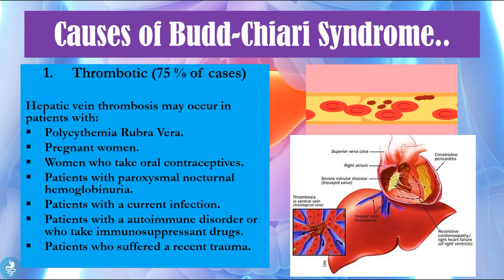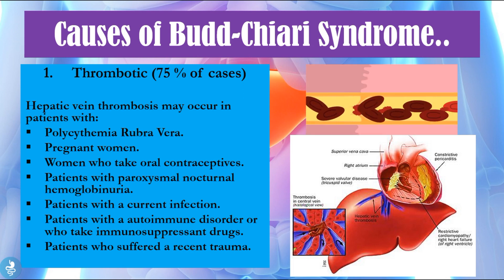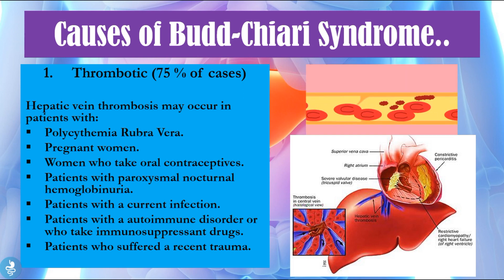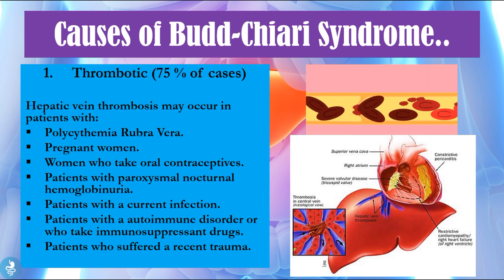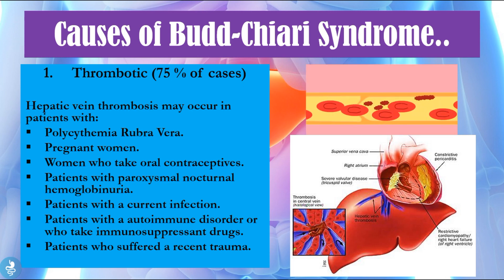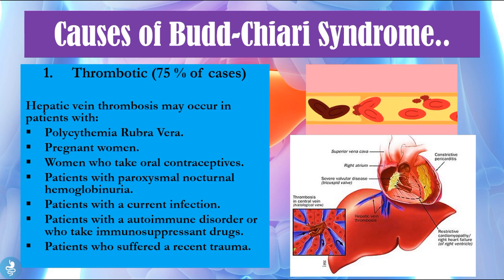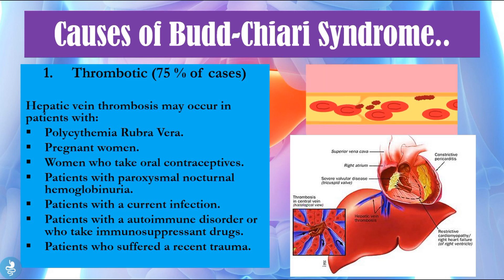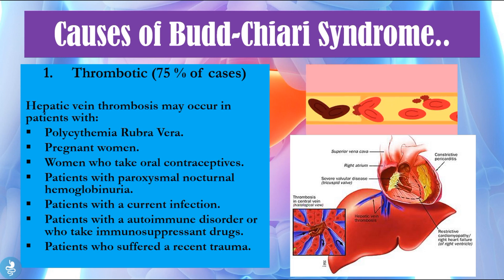So what are the causes of Budd-Chiari syndrome? Most cases are caused by a thrombus which occludes the vessels — 75% of cases are actually thrombotic. Hepatic vein thrombosis usually occurs in patients with polycythemia rubra vera, pregnant women, women who take oral contraceptives, patients with paroxysmal nocturnal hemoglobinuria, patients with current infections, patients with autoimmune disorders or who take immunosuppressant drugs, and patients who have suffered recent trauma. All these are pro-thrombotic features that can lead to the onset of Budd-Chiari syndrome.